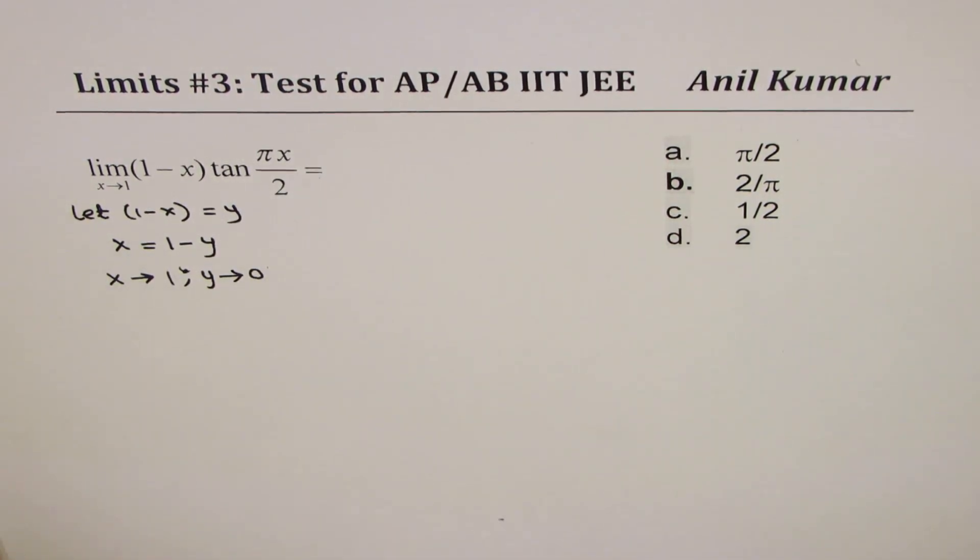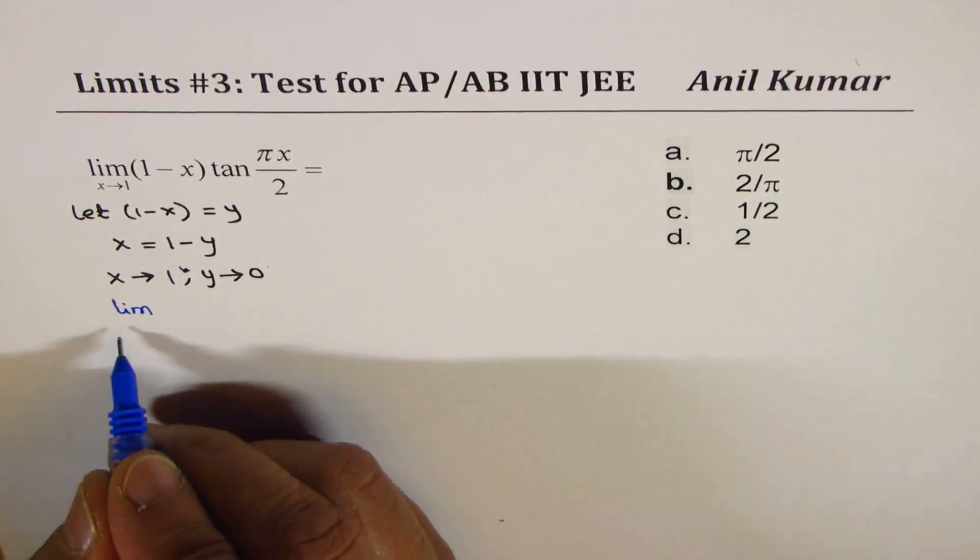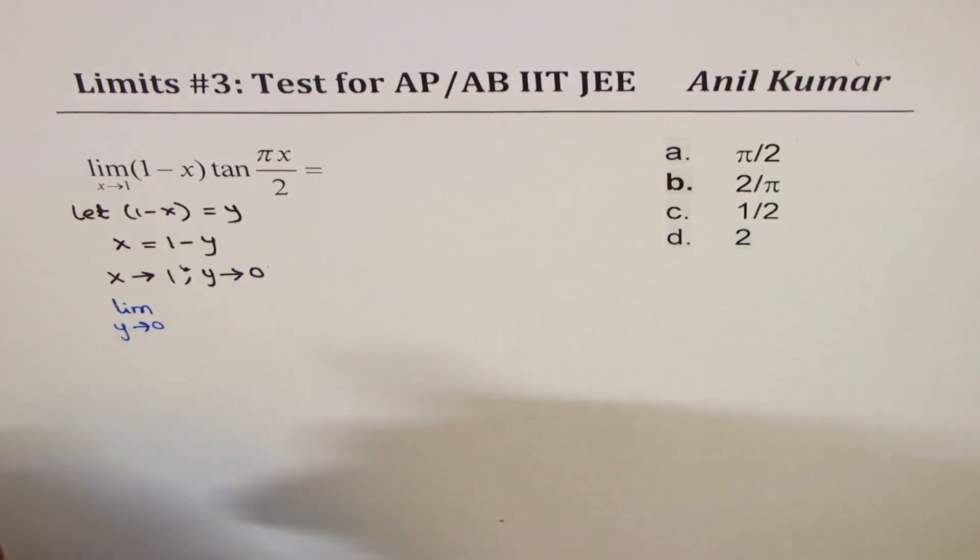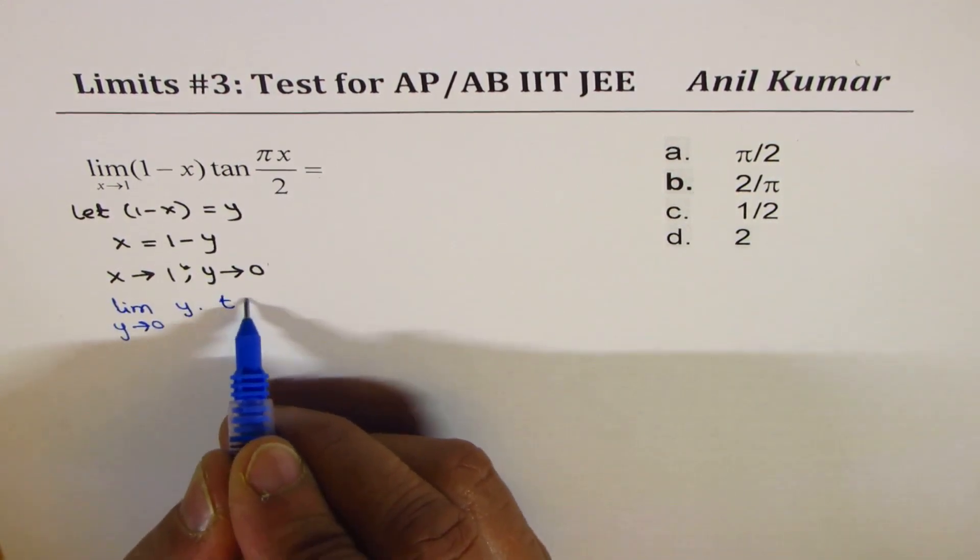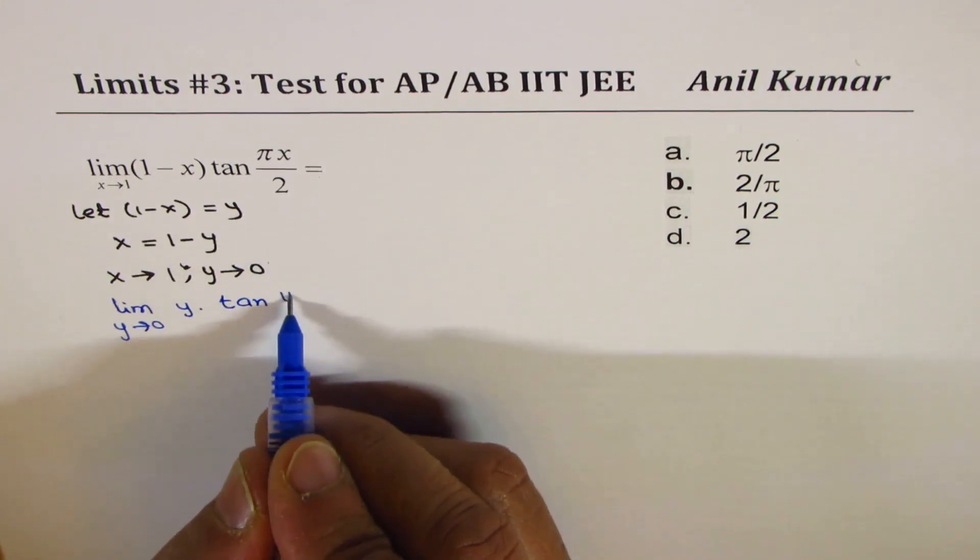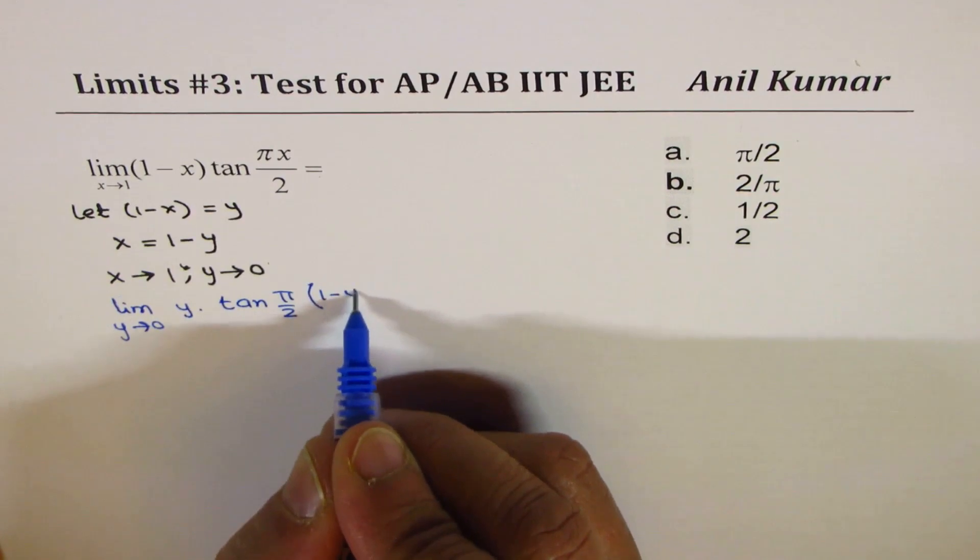Therefore we can rewrite the question as limit y approaches 0, y times tan of pi by 2 times (1 minus y).